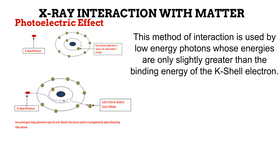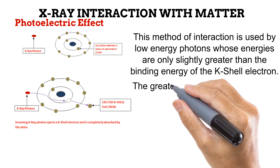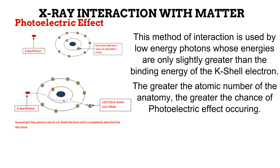This interaction will occur only when the photon energy is slightly greater than the binding energy of the K-shell electron. When the photon energy is only slightly greater than the binding energy of the K-shell electron, the photon only has sufficient energy to eject the electron. It does not have enough energy to leave the atom after spending all that energy to eject the K-shell electron. It is thus absorbed by the atom. This explains the name photoelectric absorption.